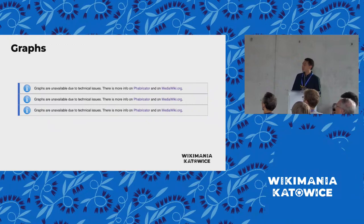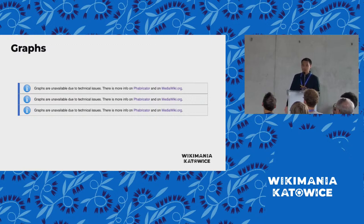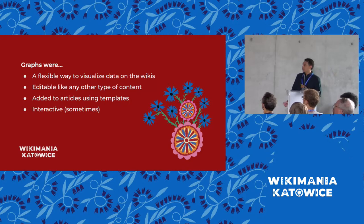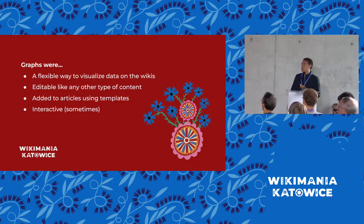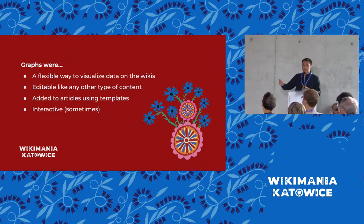Instead of seeing a graph right now, as I mentioned, the extension is no longer available in production wikis. If you actually go to that article, depending on which wiki you're on, this might look a little bit different or not show up at all. Unfortunately, there was a security vulnerability and it was turned off last year. When we were trying to get the extension enabled again, we discovered flaws in the design that made it impossible to meet our current standards of software security and sustainability. So it's been disabled. Recapping quickly: graphs were a pretty flexible way to visualize data on the wikis; they were editable like other types of content; they could be added on their own but most were added using templates; and some had interactivity, though most of the templated ones were pretty basic — like hover states or highlighting one series.